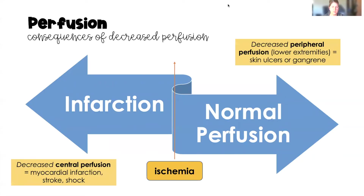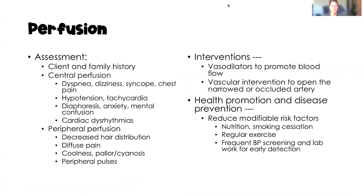Let's talk about the consequences of decreased perfusion. We have normal perfusion on one side of the continuum and infarction on the far side. Decreased central perfusion leads to myocardial infarction, stroke, hypovolemic shock, cardiogenic shock, or obstructive shock. Decreased peripheral perfusion leads to skin ulcers or gangrene, especially in our lower extremities. Sitting right in the middle between normal perfusion and infarction is ischemia — that's where our problems start — and the result of ischemia is infarction.